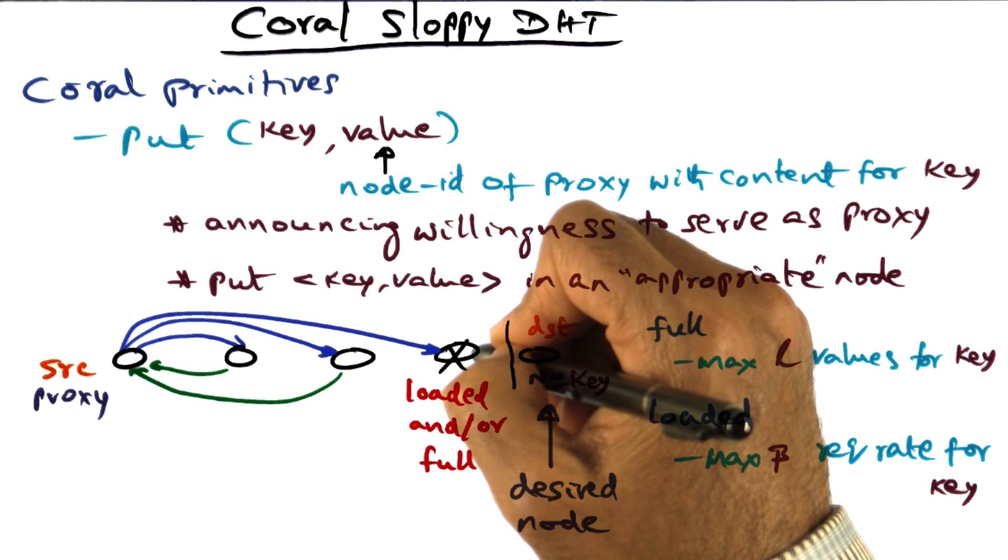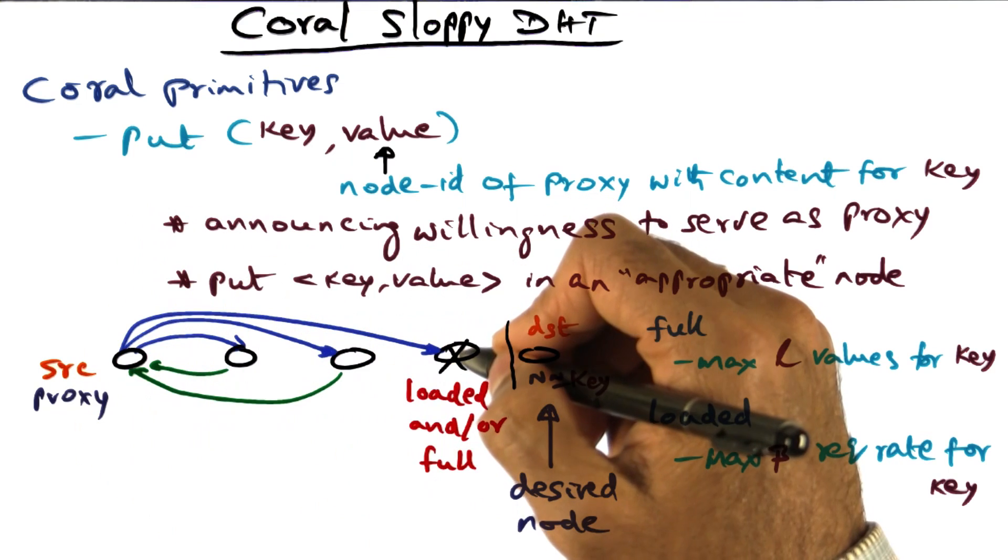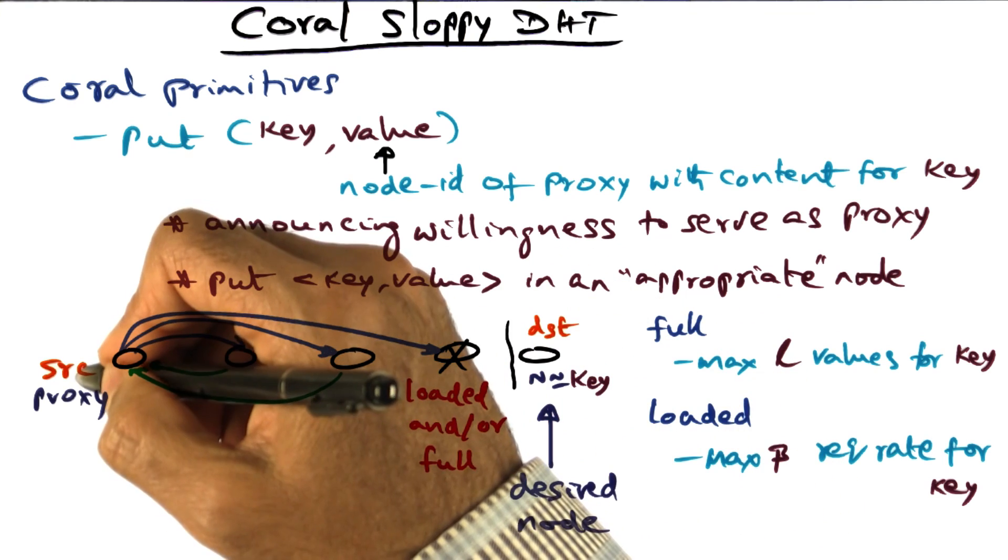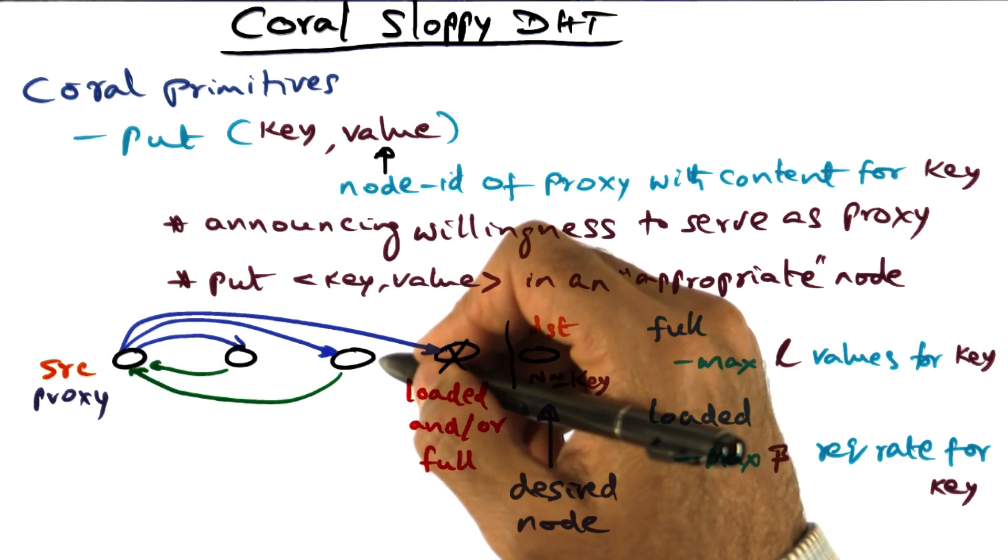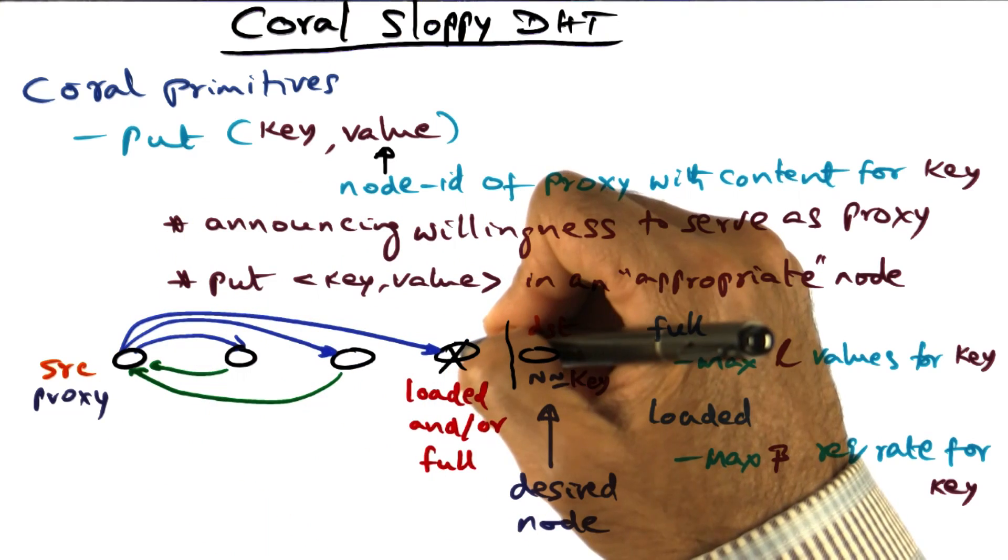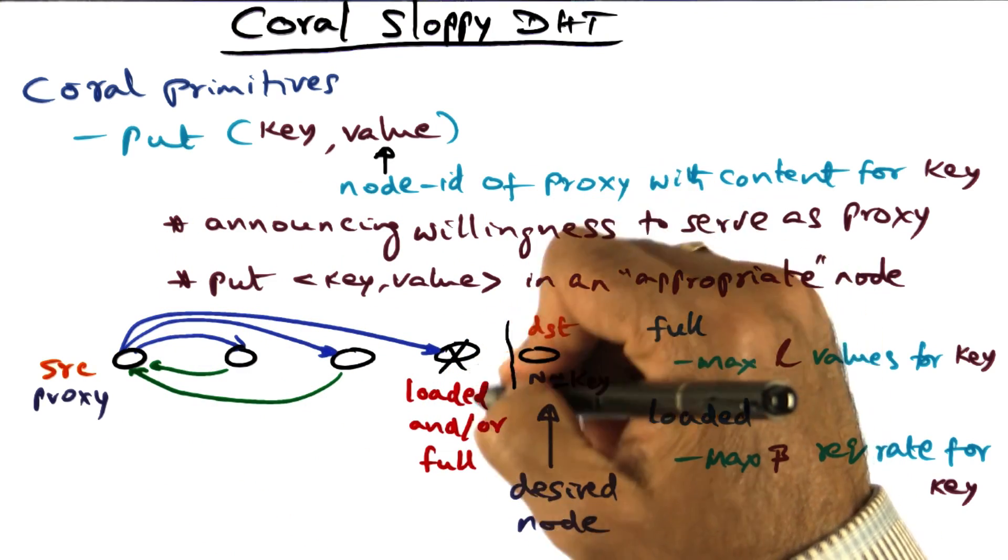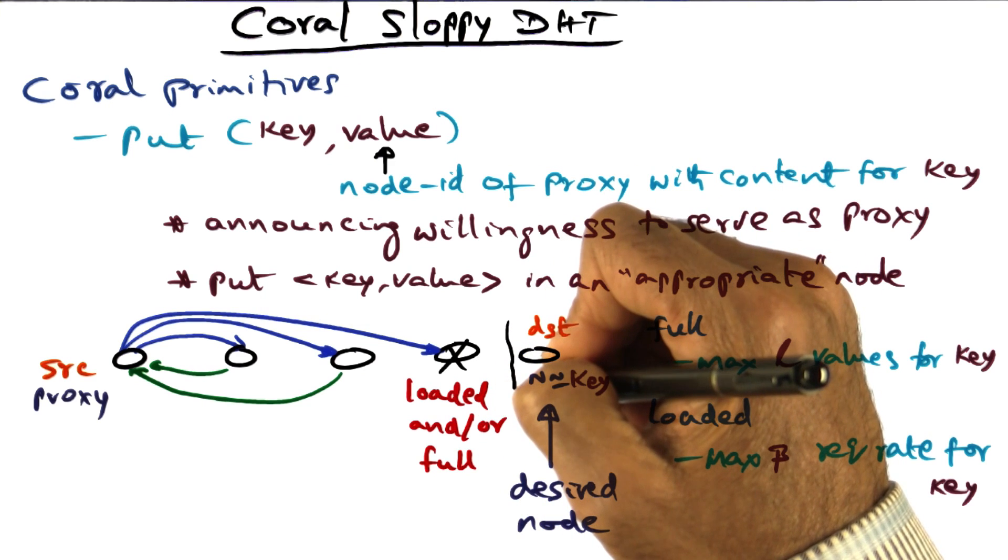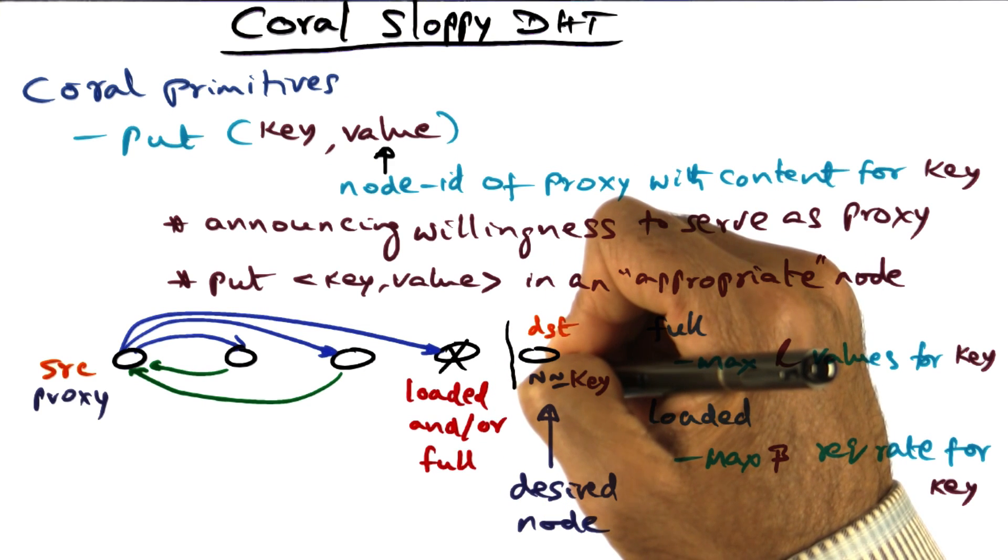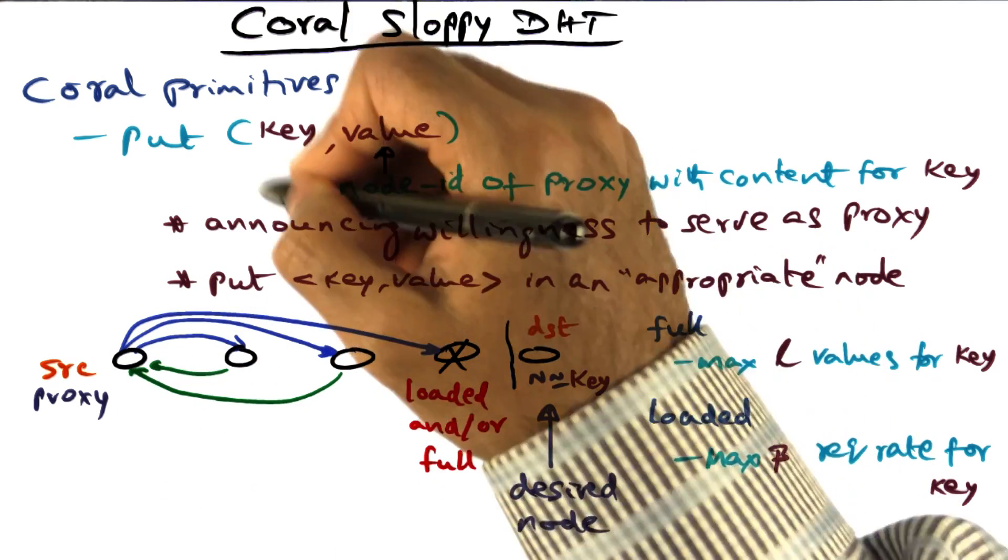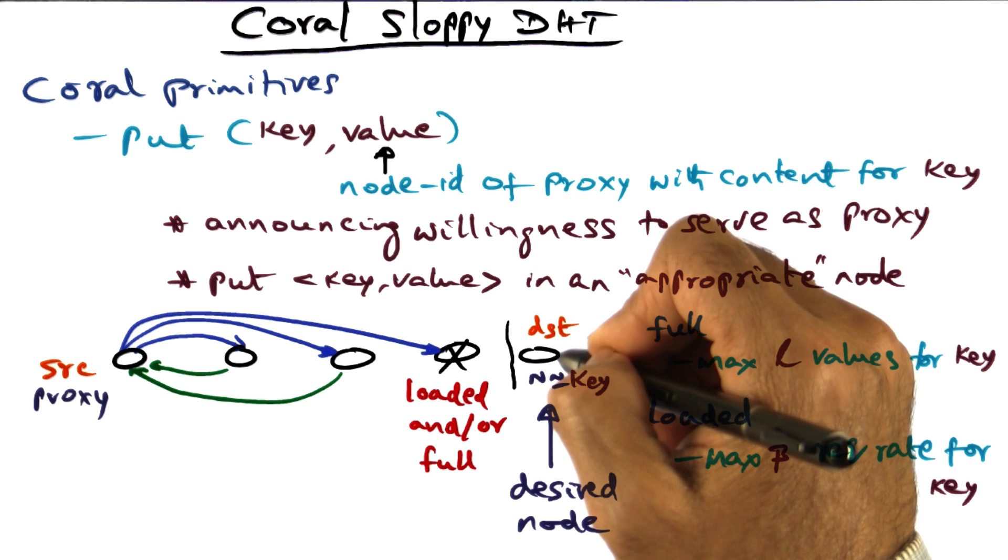So this node responds back to me and says, I'm either loaded or full. If that is the response I get back, then what I'm going to infer from that response is that the rest of the distance going towards the destination is all clogged up because of the tree saturation. And therefore, I'm not going to even try to place the key-value pair at the desired destination.